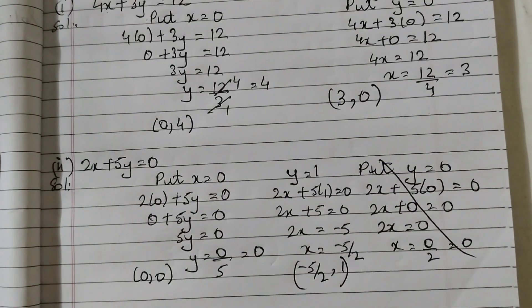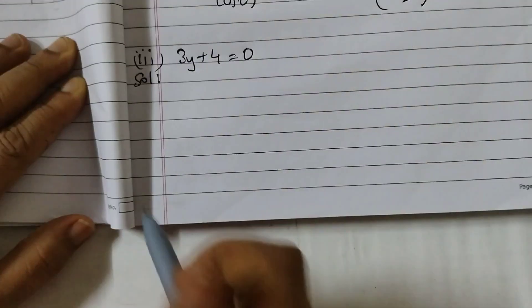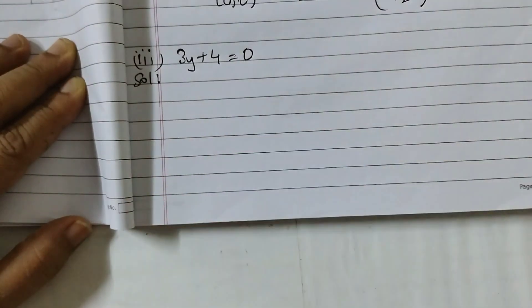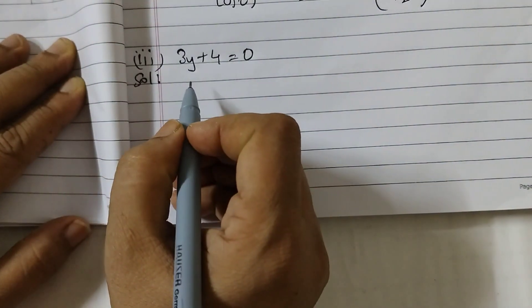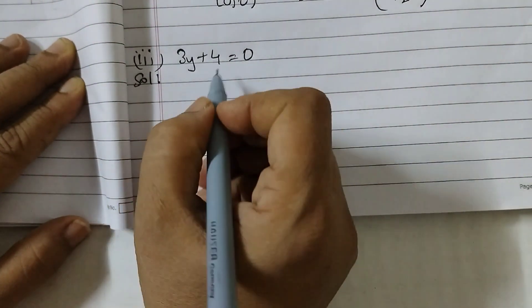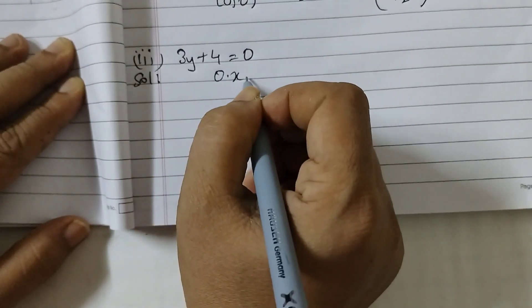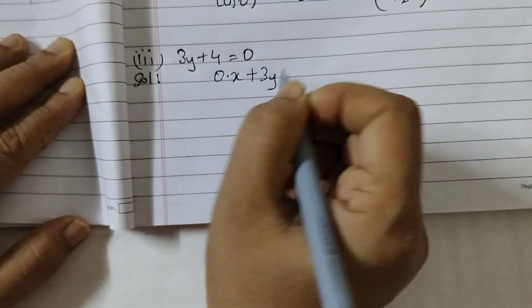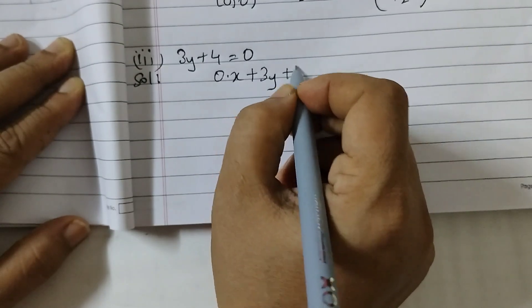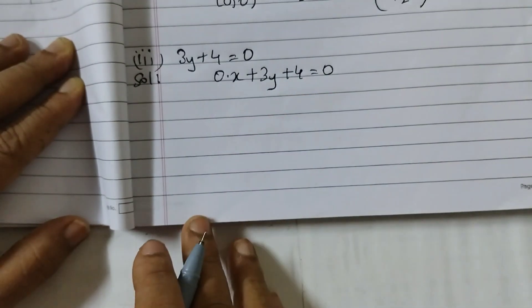Now moving on to the third one which is 3y plus 4 is equal to 0. Now if you see here the x term is missing here. So if you want you can write it as 0x, 0 into x plus 3y and then plus 4 is equal to 0 and then you can solve it.